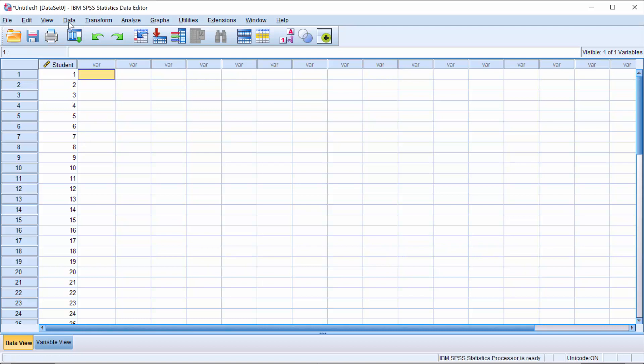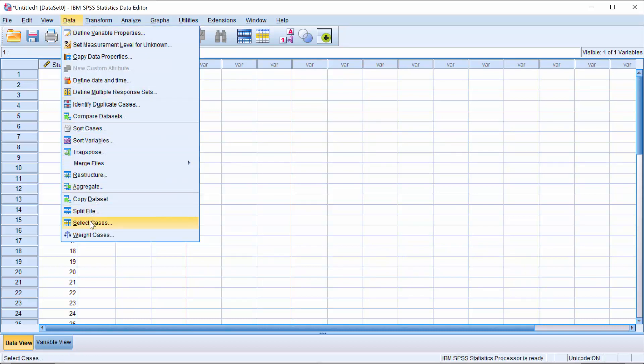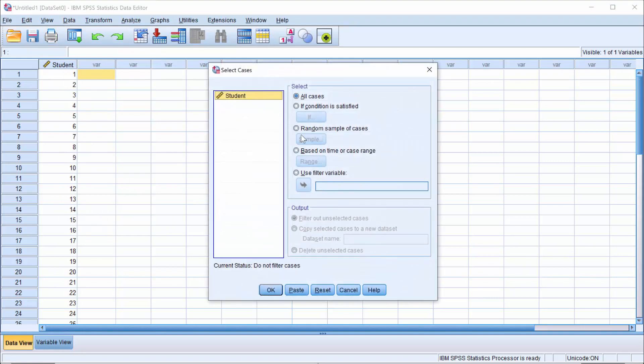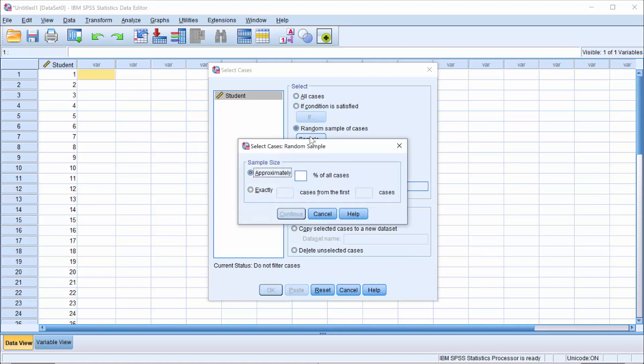SPSS can do this really easily. If I go to the data menu, I can go to where it says select cases. And then right over here, it says random sample of cases.